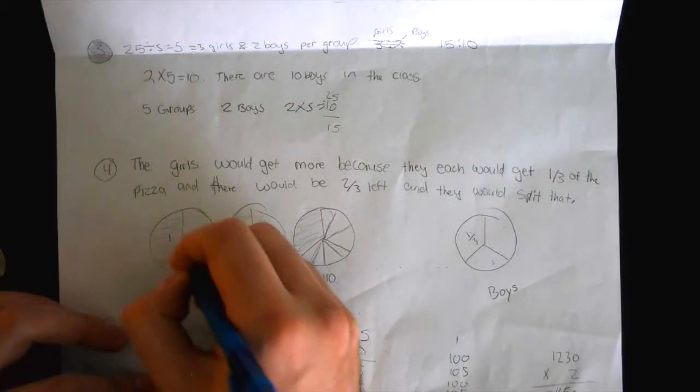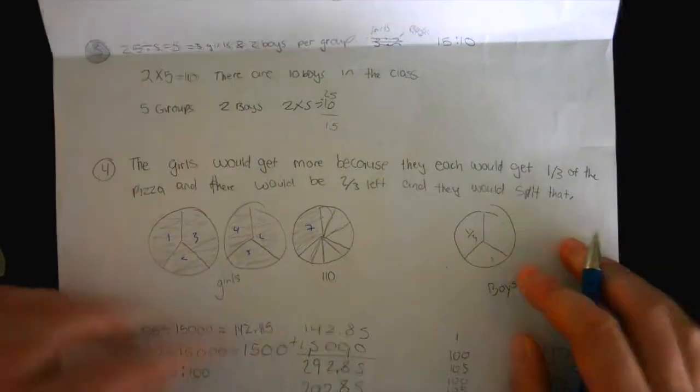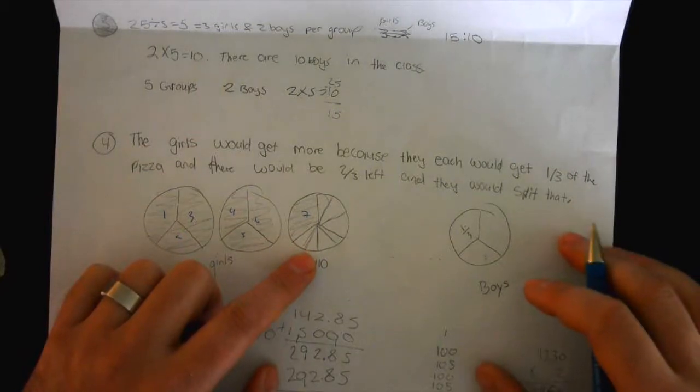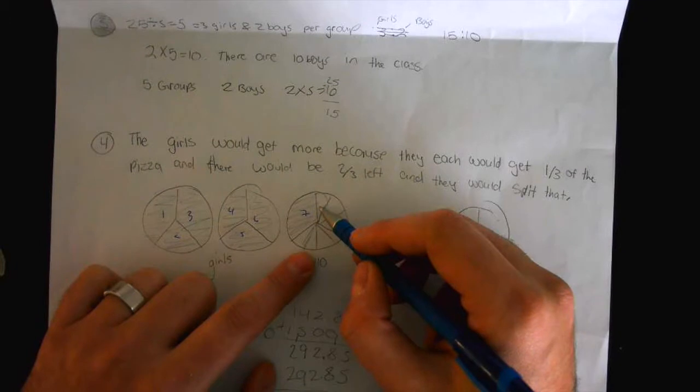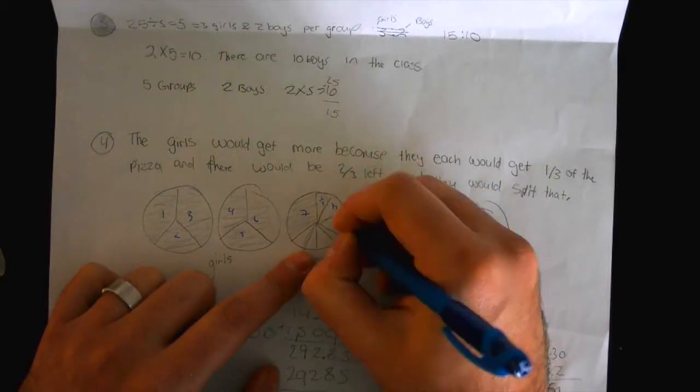So the girls get one, two, three, four, five, six, seven. And then Aaliyah, you did something very interesting here. Can you explain this to us, what your group did? There's two-thirds left. So what we did is that we split that into seven slices so the girls can have another slice each. So one-seventh per. That's what I noticed here. So there was two-thirds left. And you cut the two-thirds into seven slices.